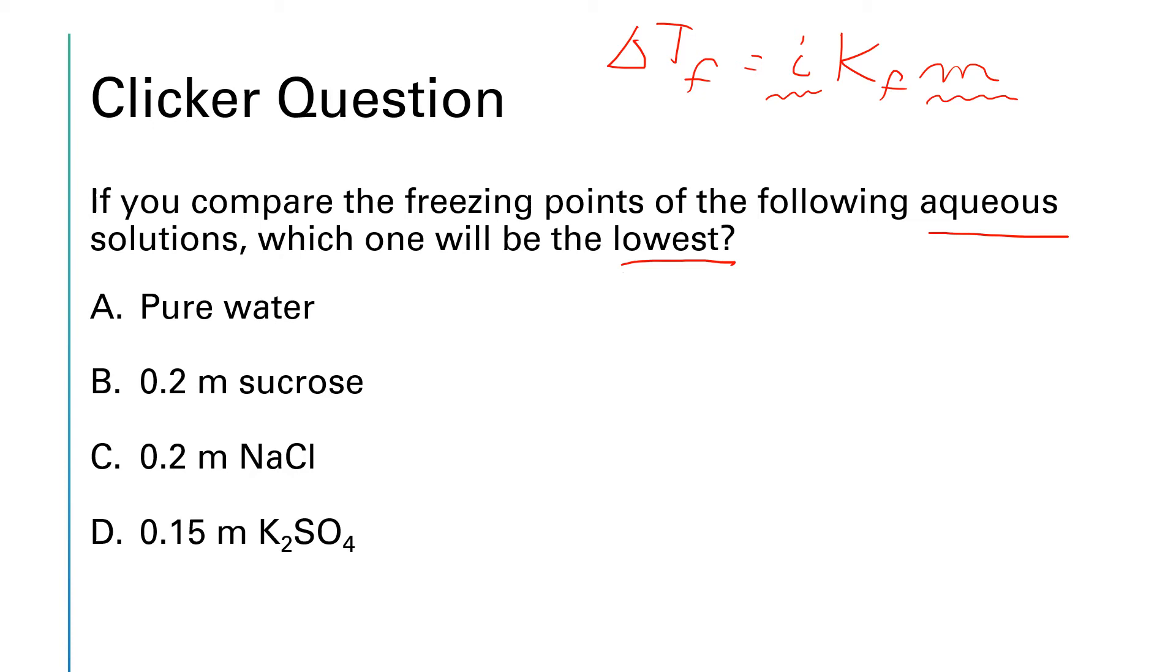So we need to examine i times molality for each one of these solutions. Whichever one has the biggest i times m will have the biggest delta T sub f, which means the most depression of the freezing point and therefore the lowest freezing point. So we just need to examine i times m for all of these.